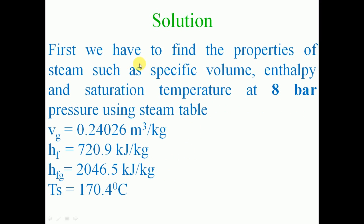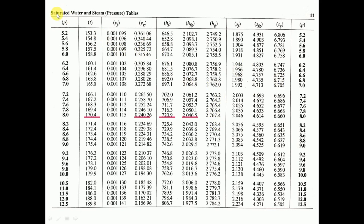To solve this problem, first we have to find the properties of steam such as specific volume, enthalpy, and saturation temperature at 8 bar pressure using the steam table. Here we have a screenshot of the steam table — saturated water and steam pressure tables — where for different pressures the properties of steam are given. The pressure in the table increases from 5.2 bar up to 12.5 bar, and at 8 bar we find the saturation temperature t equal to 170.4 degree Celsius.